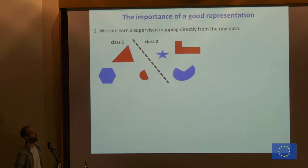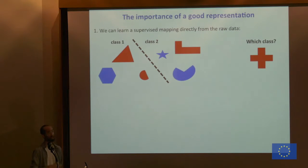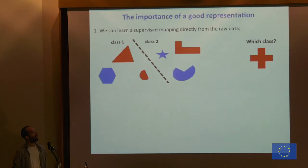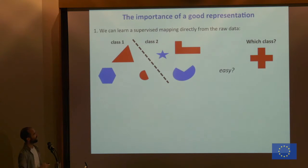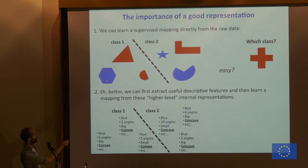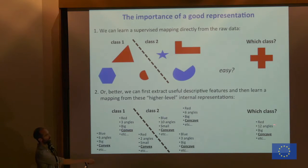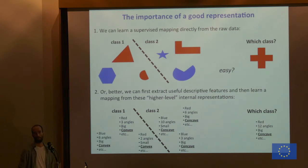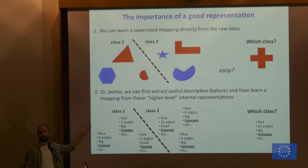Another example: six training examples of class 1 and class 2. With five seconds for feature extraction, you extract: this is blue, six angles, big, convex; this is red, three angles, big, convex; and so on. When shown a new example, you immediately see that the concave feature is common only among class 2 examples but not class 1. This is a simple example showing why unsupervised feature learning is useful, even for establishing supervised classifications.